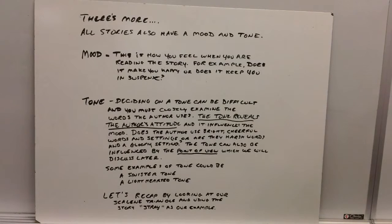Now, a tone is deciding on a tone can be very difficult and you must closely examine the words the author uses. The tone reveals the author's attitude and it influences the mood. Does the author use bright, cheerful words and settings or are they harsh words in a gloomy setting? The tone can also be influenced by the point of view, which we will discuss later. Some examples of tone could be a sinister tone, you know, things are bad, or a lighthearted tone, where things are happy.